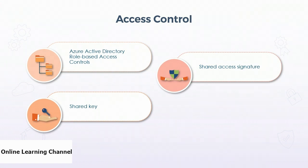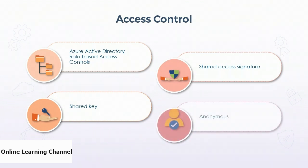Shared keys are used to build a connection string used programmatically by an application to access the contents of the storage account using an authorization header in the request. Anonymous access can be provided for read access to resources within a Blob Storage account, bypassing the need for authorization.